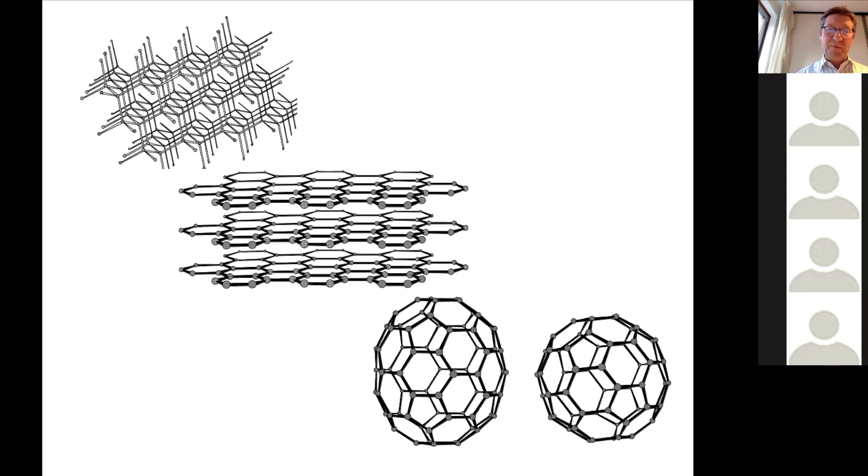The third allotropic form of carbon are the fullerenes. And as I said before, the fullerenes were succeeded by the carbon nanotubes, but also graphene. Graphene is basically a limited part, a very small part of graphite.